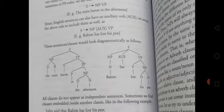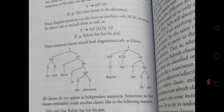The structure shows: noun phrase and verb phrase. In 'the train leaves in the afternoon,' 'the' is the determiner, 'train' is the noun, 'leaves' is the verb in the verb phrase, and 'in the afternoon' is a prepositional phrase. In 'Rahim has lost his pen,' 'Rahim' is the noun, 'has' is the auxiliary, 'lost' is the verb, and 'his pen' is the noun phrase with 'his' as determiner and 'pen' as noun.